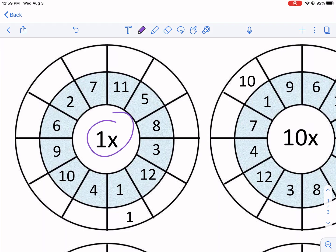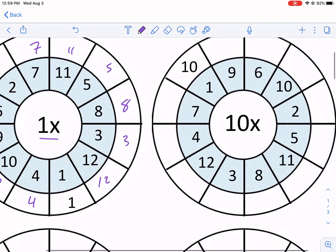Now for 1, it's going to be identity property of multiplication. So anything times 1 is just itself. So this one's pretty straightforward. We're just going to write in all these answers right away because times 1 is itself.